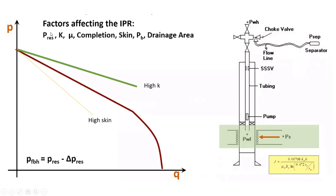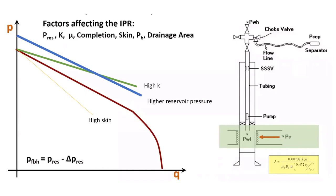Moving now to the outflow performance — the flow from the bottom hole to the wellhead — we will see what transpires within the tubing. The fluid has to overcome three types of resistive forces, but we will emphasize two because one is most of the time negligible. If the fluid moves from the bottom hole to the wellhead, it has to overcome the weight of the fluid, which is the hydrostatic pressure, and the frictional force between the fluids and the walls of the tubing.